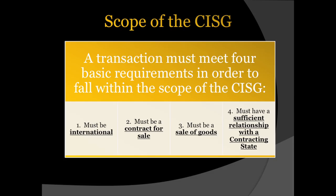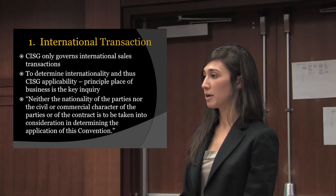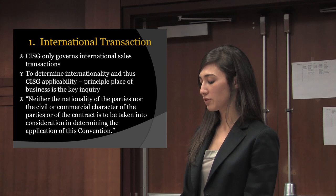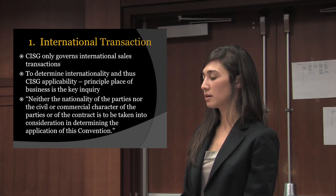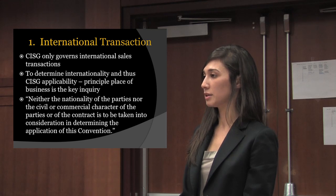To fall within the scope of the CISG, a transaction must meet four basic requirements: it must be international, a contract for sale, a sale of goods, and have a sufficient relationship with a contracting state. The CISG only governs international sales transactions. Internationality is determined by the principal place of business of the parties. The places of business must be in different countries to satisfy this requirement. The nationalities of the parties and the character of the transaction are completely irrelevant.